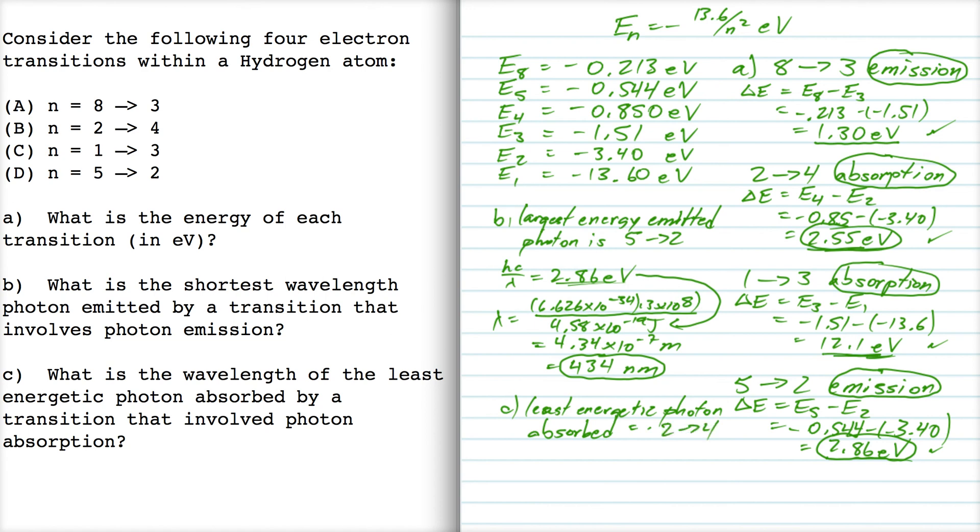So we're going to set hc over lambda equal to 2.55 eV. And just like we did up here, we're going to find lambda. So lambda is going to be hc, and then we need this energy here, 2.55 eV in joules, and that's 4.08 times 10 to the minus 19 joules. And that works out to be 487 nanometers, better for part C. That makes sense. This is a little less energetic, right? The 2.86 is a little more energetic, and it has a little shorter wavelength, so now that it all works.